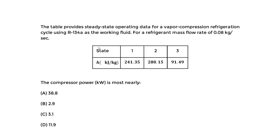We're given a table showing enthalpy values for states one, two, and three. You might be confused about what cycle this is, but the hint is that they tell you it's a vapor compression refrigeration cycle. So you would refer in the handbook to that cycle using this refrigerant and the following conditions for this mass flow rate.